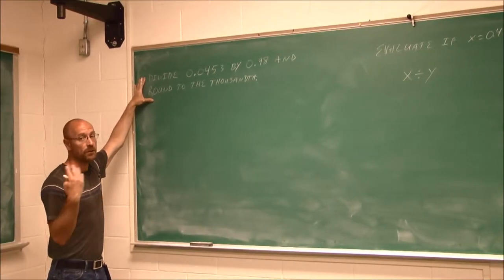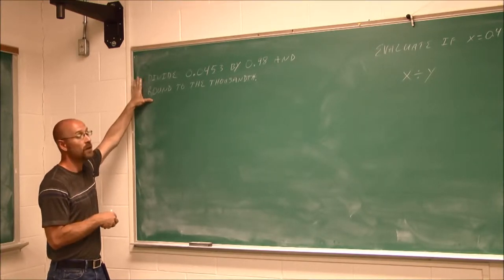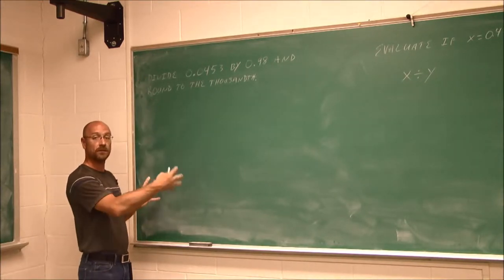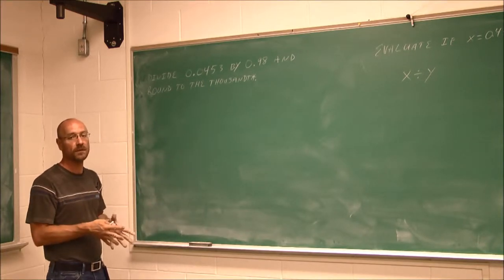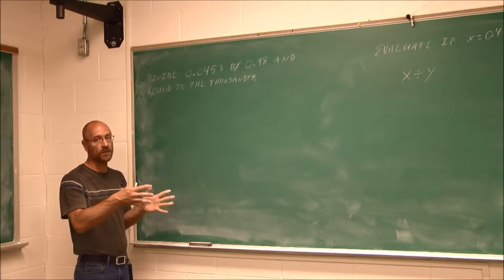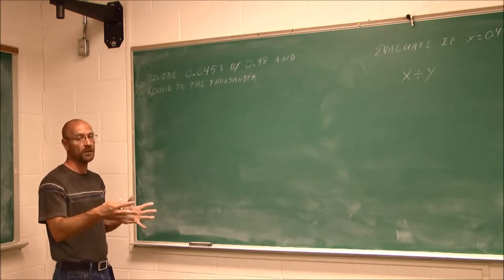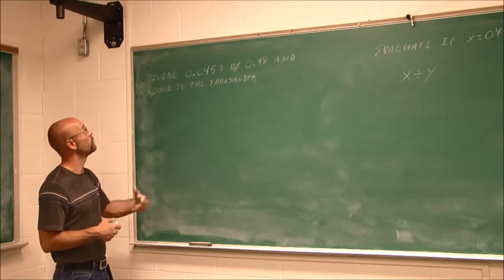Sometimes when we do division, they're not going to terminate like previous examples did. We're going to do division and it could potentially continue on and on. So eventually we have to round it to some point. Even if we were using a calculator, the calculator can only display so many digits, so it's going to round it off at some point. It's not an exact value, it's a rounded value.